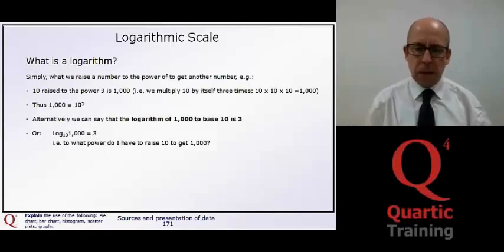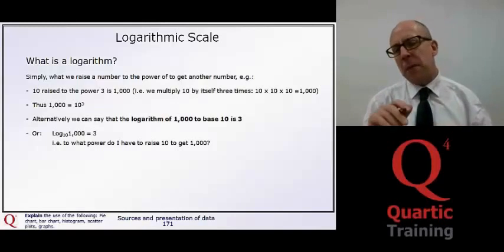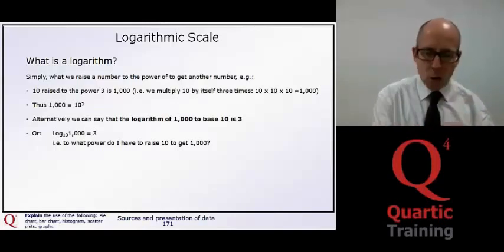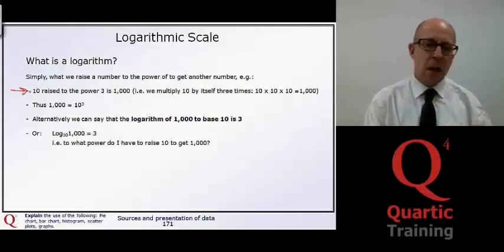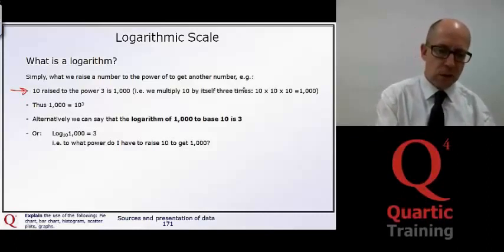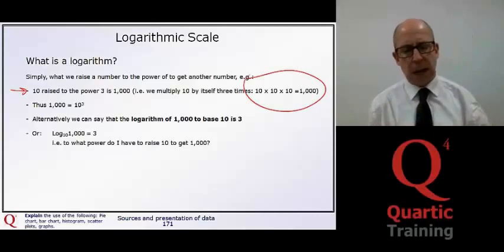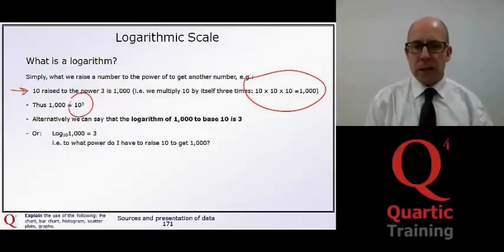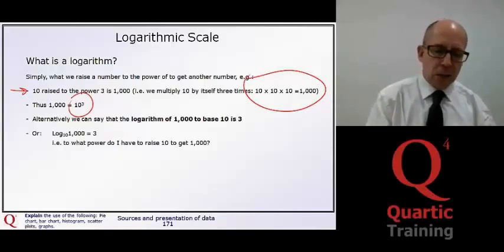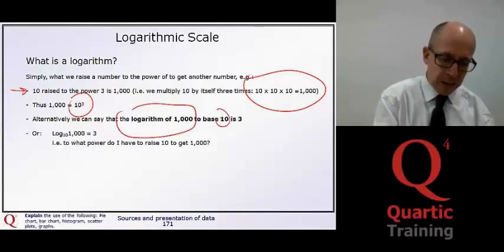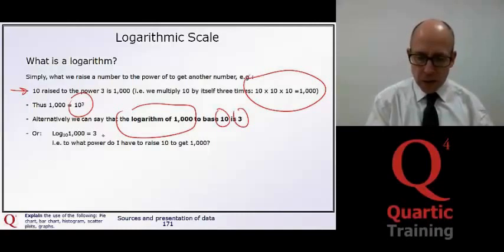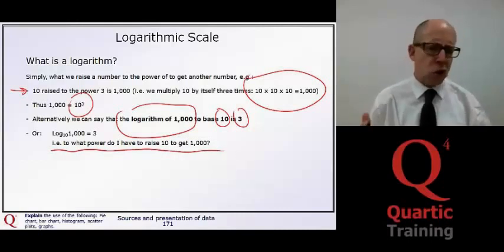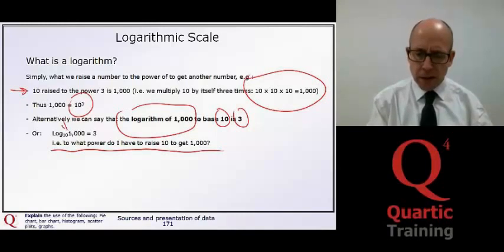Now, what is a logarithm? Very simply, it's what we raise one given number to to get another number, i.e., what is it to the power of? For example, we could say that 10 raised to the power of 3 is 1,000. In other words, we multiply 10 by itself three times in order to get up to 1,000. We can express 1,000 as 10 raised to the power of 3. Or, another way of expressing it, perhaps slightly more elegantly, is to say that the logarithm of 1,000 to base 10 is 3. Or, log base 10 to 1,000 equals 3. We're answering the question, to what power do I have to raise 10 to get 1,000? So it's really a shorthand way of expressing large numbers. But, using a common base, so we might use the base 10 here, for example. Or, as we saw earlier on in the key concepts, we might actually use a base E.